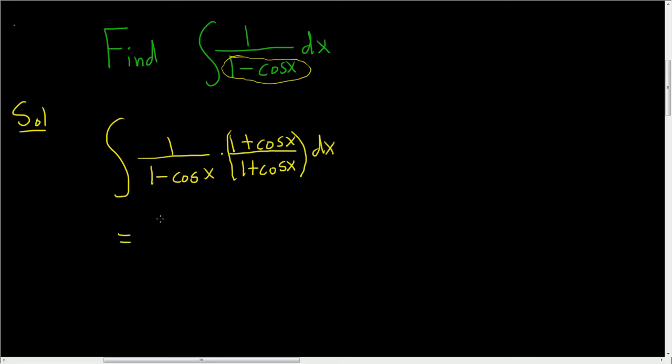So in the numerator, we have 1 times 1 plus cosine x, so we just get 1 plus cosine x. And in the denominator, we're going to use the difference of squares formula. We have 1 minus cosine x times 1 plus cosine x.